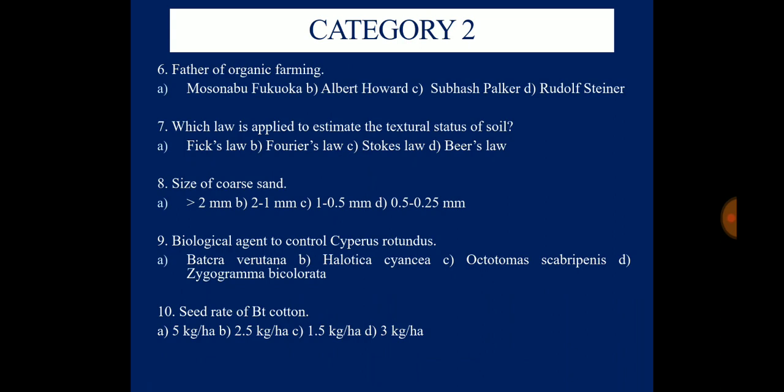Question 6: Who is the Father of Organic Farming? Options are Masanobu Fukuoka, Albert Howard, Subhash Palekar, and Rudolf Steiner. Question 7: Which law is applied to estimate the textural status of soil? Options are Fick's law, Fourier's law, Stokes' law, and Beer's law.